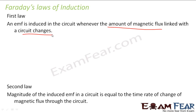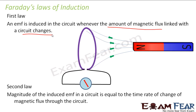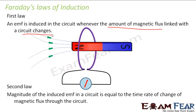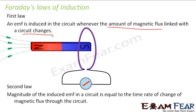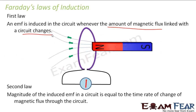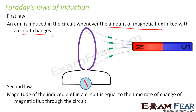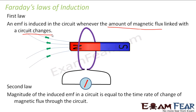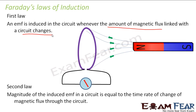Taking the example of the same setup: when the magnet was moved, there was a change in flux because the number of magnetic field lines crossing the area was changing due to the motion of the magnet. Since there is a change in flux, there is an induced EMF. As soon as you stop moving the magnet, there is no change in the number of magnetic field lines, so there is no change in flux and therefore no induced current.